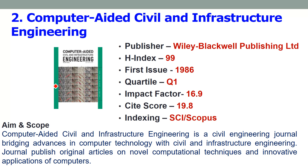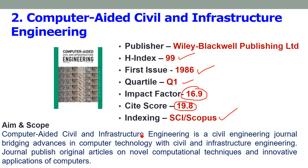The second journal is Computer Aided Civil and Infrastructure Engineering, published by Wiley-Blackwell Publishing Limited. The H-index of this journal is 99. The journal was launched in 1986 and is also a Quartile 1 journal. The impact factor is 16.9, whereas the site score is 19.8. It is indexed in SCI, Web of Science, and Scopus. You can submit papers on computer-aided advances with applications in civil and infrastructure engineering — any article with novel computational techniques and innovative computer applications.